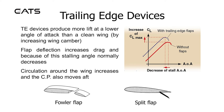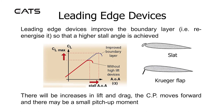Trailing edge devices produce more lift at a lower angle of attack than a clean wing by increasing wing camber. Flap deflection increases drag and because of this stalling angle normally decreases. Circulation around the wing increases and the centre of pressure also moves aft.